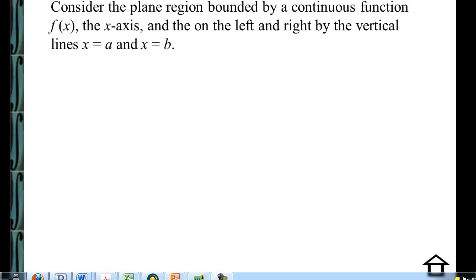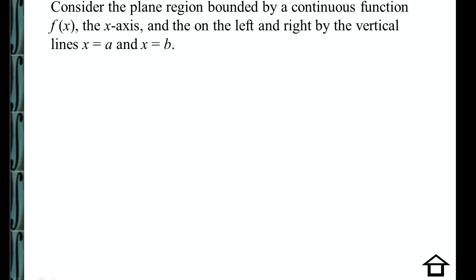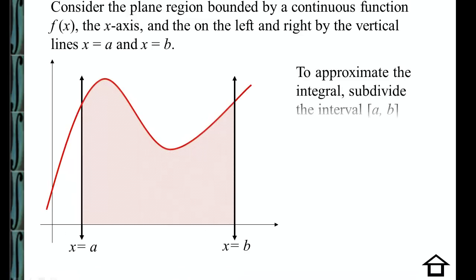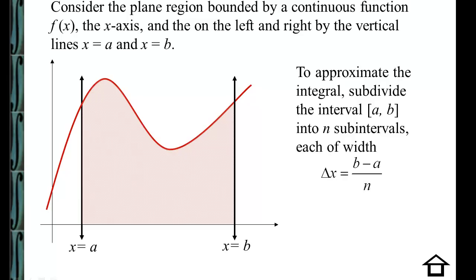Let's consider the plane region bounded by a continuous function f of x, the x-axis, and on the left and right by the vertical lines x equals a and x equals b. To approximate the integral, we're going to subdivide this interval from a to b into n subintervals. And we're going to remember that delta x, the width of each subinterval, is b minus a divided by n.